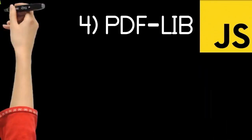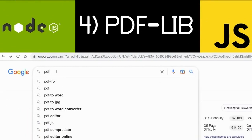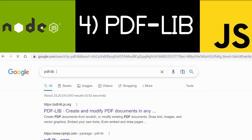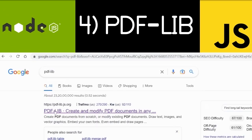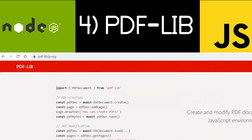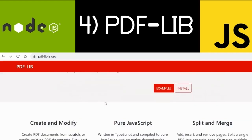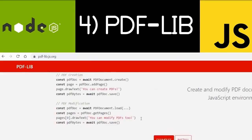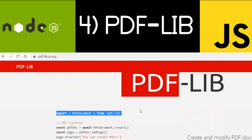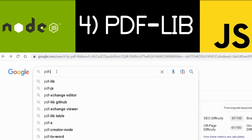The fourth library is called pdf-lib. It's again a JavaScript and Node.js library. Just go to Google and type 'pdf-lib' — the first link is the official documentation website. It has a lot of documentation and it's the best library if you want to modify or draw something on the screen. It's a very extensible library for generating PDF documents.